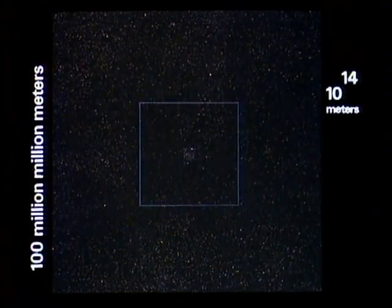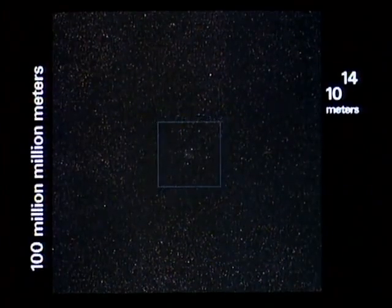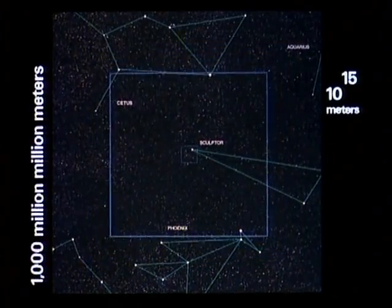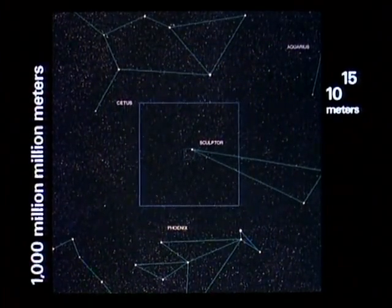As the solar system shrinks to one bright point in the distance, our Sun is plainly now only one among the stars. Looking back from here we note four southern constellations still much as they appear from the far side of the earth.